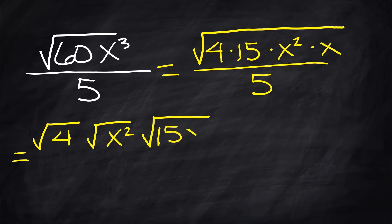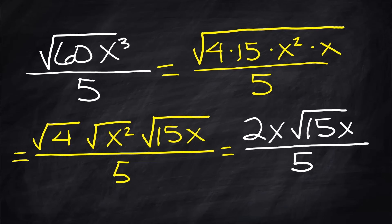And the leftovers, 15x stays in the radical by itself. Rewriting that, the square root of 4 is 2. The square root of x squared is x. And 15x is the leftovers.